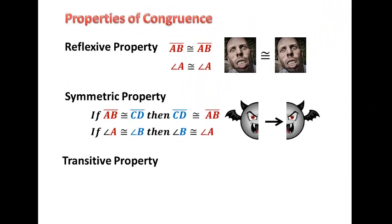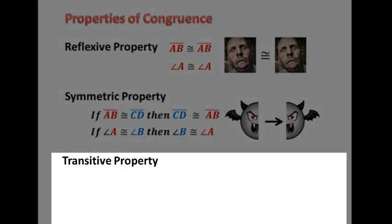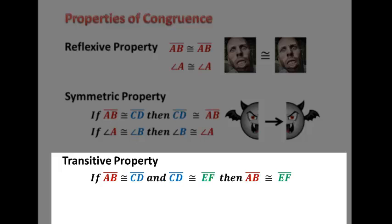Now the next one is the transitive property. And it comes from the law of syllogism. And it says that if AB is congruent to segment CD and segment CD is congruent to segment EF, then segment AB is congruent to segment EF. So look what we have in the middle here. Both segments are congruent to CD. Therefore, they are congruent to each other. And again, think of it as kind of crossing these out and then just combining what's left over.